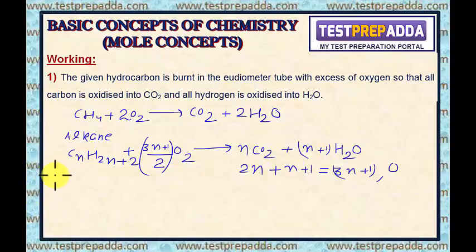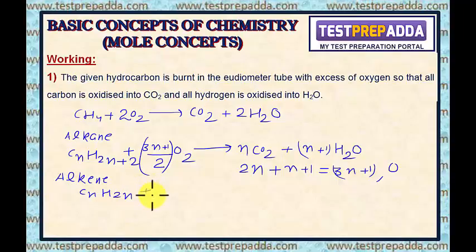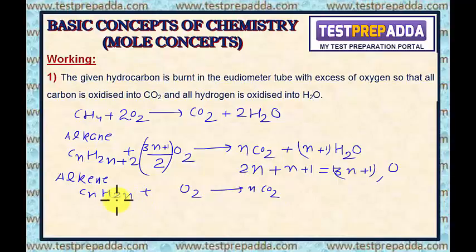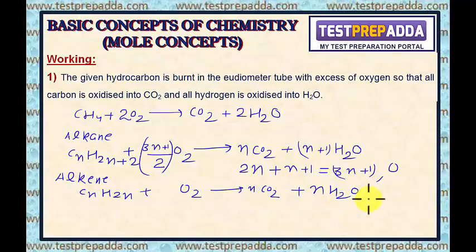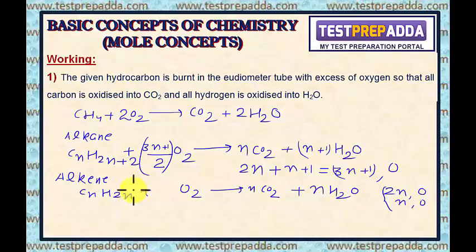In a generalized manner, if I take alkene with general formula CnH2n and react it with O2, the carbon atoms give N CO2. The 2N hydrogen atoms give N H2O. For balancing oxygen: 2N from CO2 and N from H2O gives 3N total. Dividing by 2 gives 3N/2 O2. More generally, for a hydrocarbon CxHy reacted with O2, I write X CO2 and Y/2 H2O. Balancing oxygen: 2X from CO2 plus Y/2 from H2O, then dividing gives (4X+Y)/4 O2.